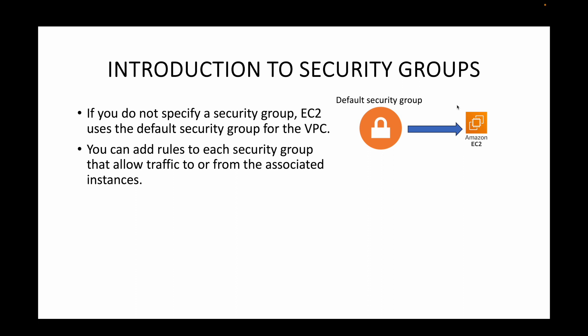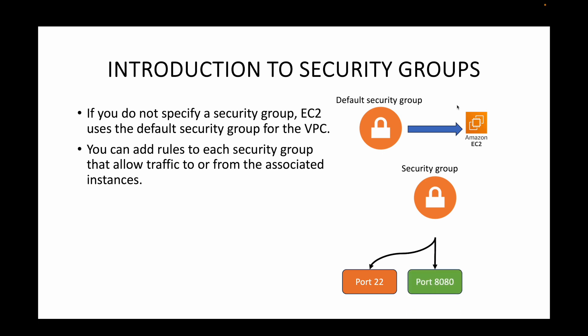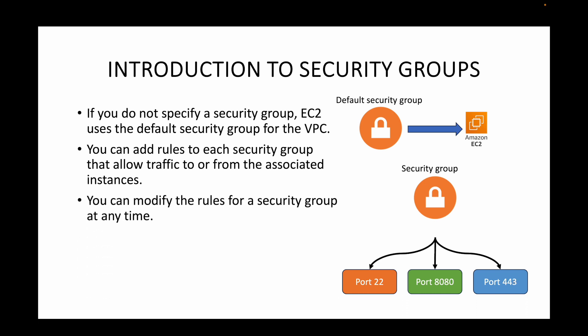Rules define what traffic you want to allow from your EC2 instances. For example, you might allow port 22 for SSH traffic, port 8080 for a Java application, or port 443 for HTTPS. Each port number is its own rule — 22 is one rule, 8080 is one rule, 443 is one rule, and so on. You can modify these rules at any time, either during launch or after the EC2 instance is already running.